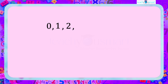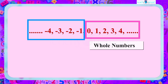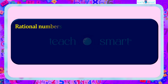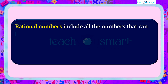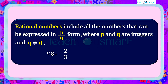Whole numbers include all the natural numbers, that is positive numbers, along with zero. Integers include all the whole numbers along with the negative numbers. Rational numbers include all the numbers that can be expressed in p by q form, where p and q are integers and q is not equal to zero. For example: 2/3, 1/2, 4/3, 0, 5, etc.